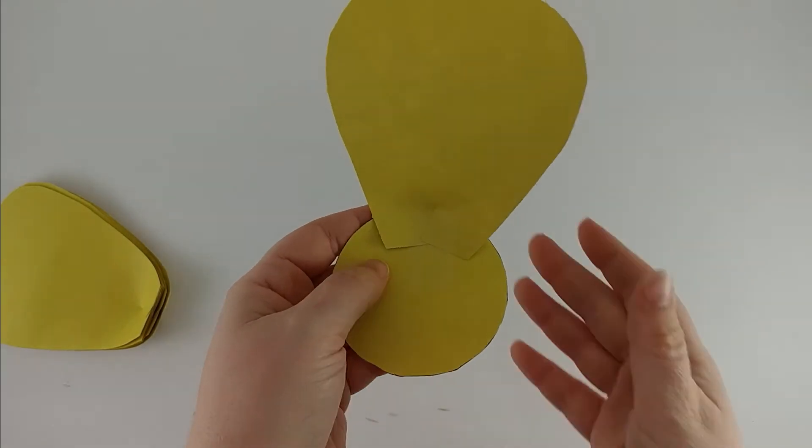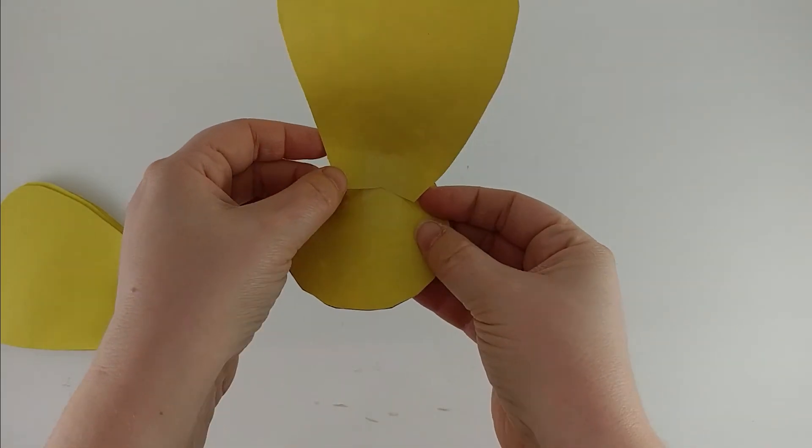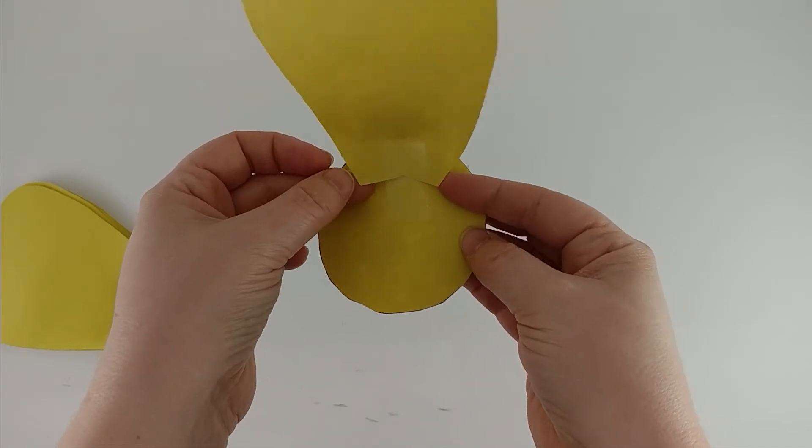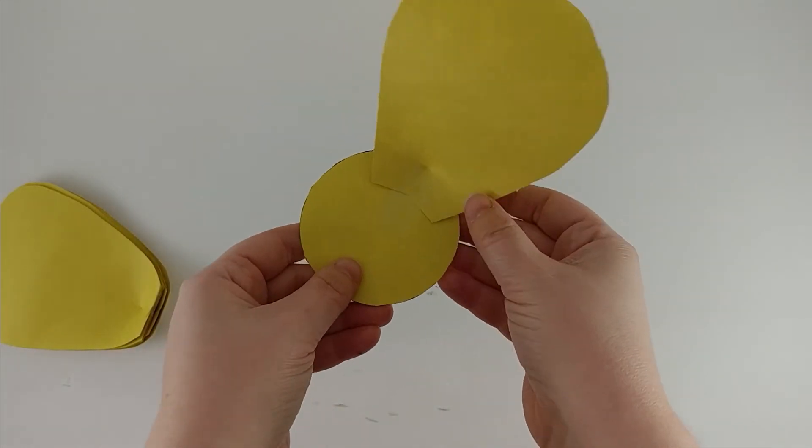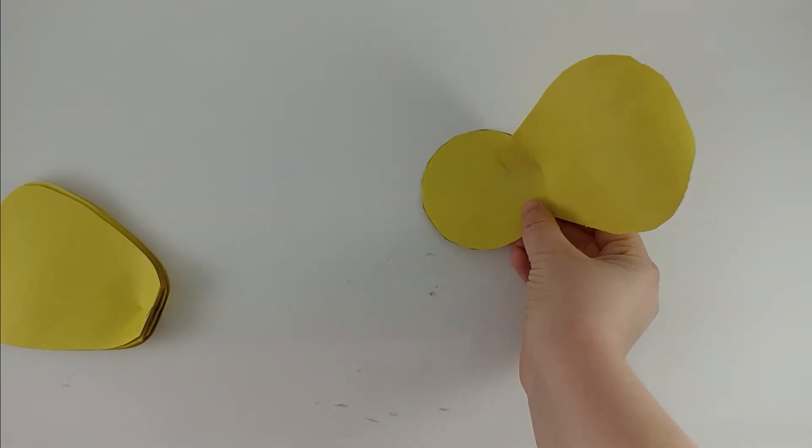I've taped it so it's just one right down the center leaving my edges free. Now I'm going to take another petal and go directly across and tape it on the other side.